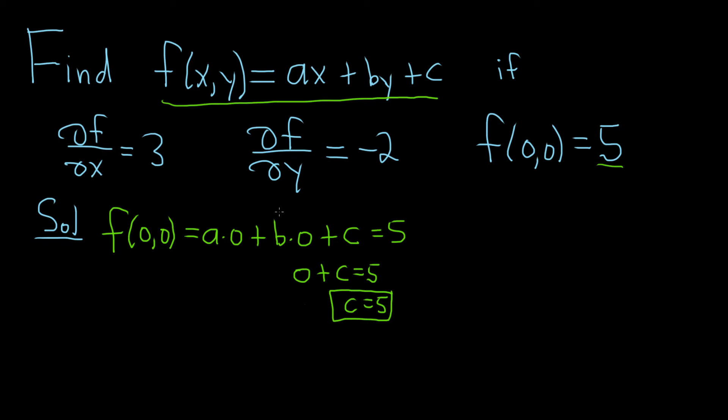So now we have c, we just need a and b. These other two conditions should give us the a and the b we want. Let's use this condition now. So taking the partial of f with respect to x, we should get 3. Let's see. Differentiating ax with respect to x, the a is a constant, and so the derivative of x is just 1, so we just get a. It's like a times 1, so it's a. When you differentiate with respect to x, every other variable is a constant.